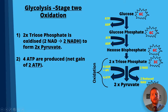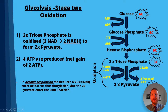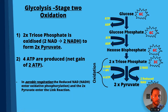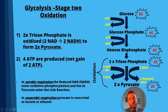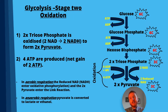We produce four ATP at the end, so we have a net gain of two ATP. In aerobic respiration, the reduced NAD (NADH) enters oxidative phosphorylation, and the two pyruvate molecules enter the link reaction. Glucose has six carbons and pyruvate has three carbons, so the six-carbon glucose has been split into two three-carbon molecules of pyruvate. In anaerobic respiration, pyruvate is converted either into lactate or ethanol, depending on whether it's the lactate pathway or the ethanol pathway.